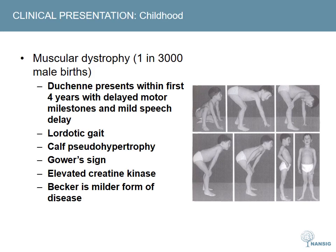The classical presentation of a childhood onset myopathy is that of Duchenne muscular dystrophy. In boys presenting with delayed motor milestones and mild speech delay, this diagnosis should always be considered. Weakness of proximal girdle muscles leads to a number of important signs, including a waddling lordotic gait, pseudohypertrophy of the calves as muscle fibres are replaced by fat and connective tissue, and Gower's sign, seen here, which is observed as children attempt to stand using their legs as support for their upper body. Becker muscular dystrophy causes symptoms at a later age, and the rate of progression tends to be slower and more variable.